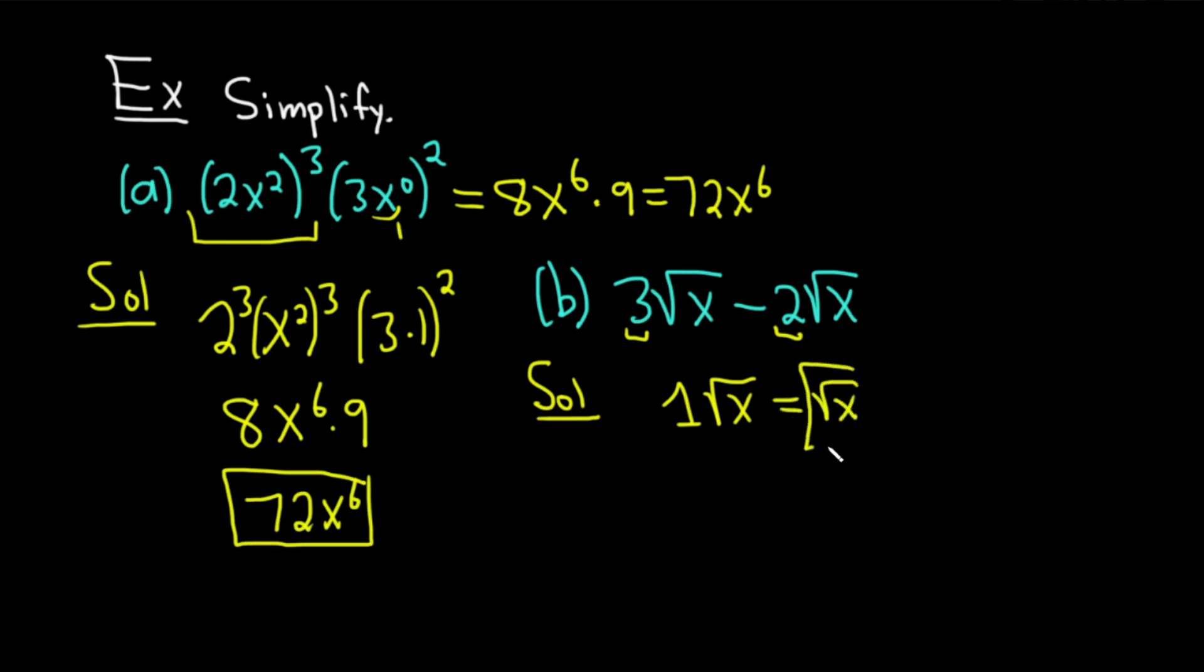So very simple, even though it might look challenging. So 3 square root of x minus 2 square root of x is just 1 square root of x, which is the same thing as the square root of x. Let's do another one.